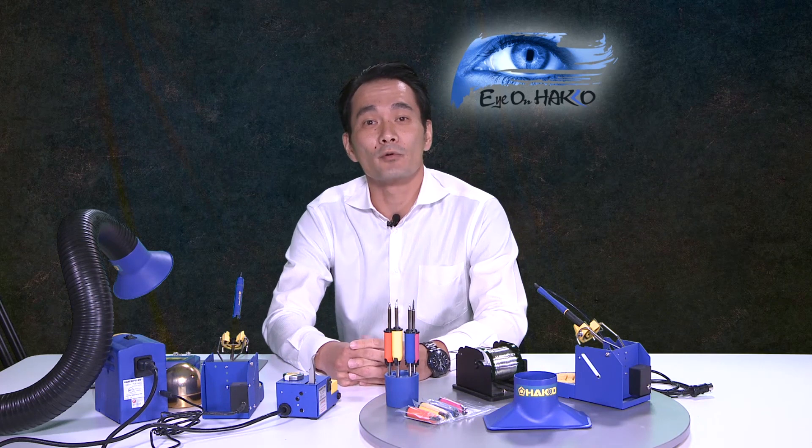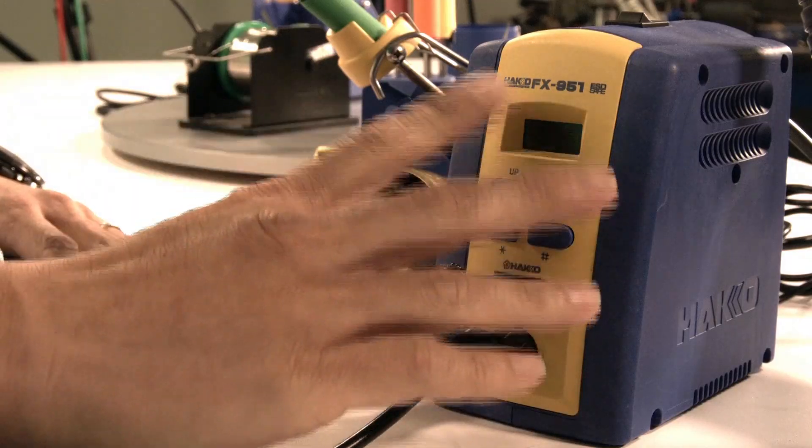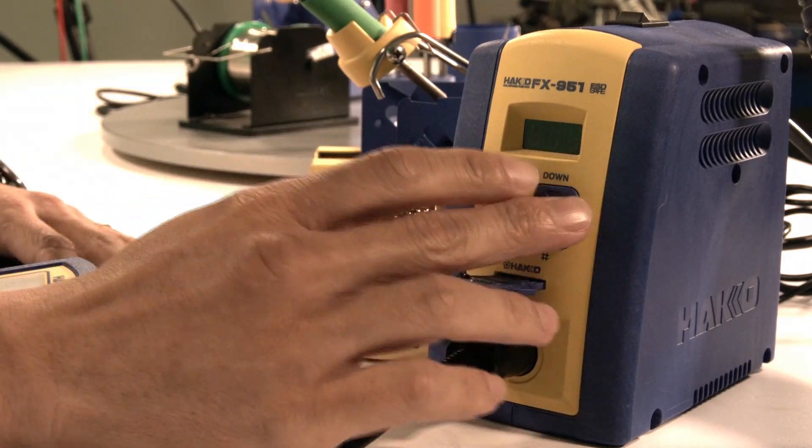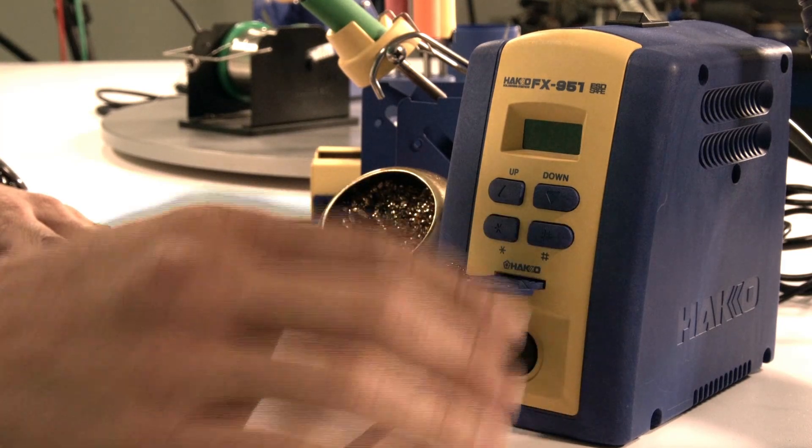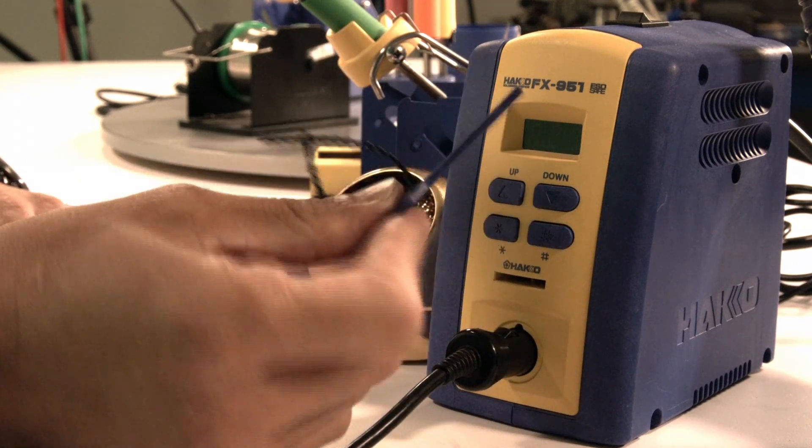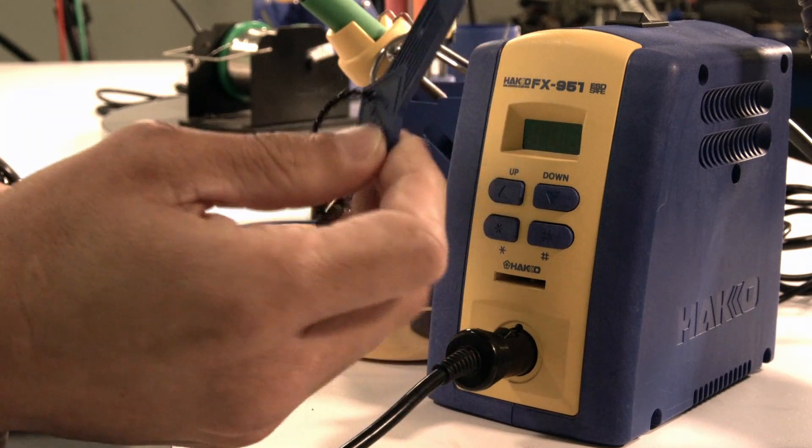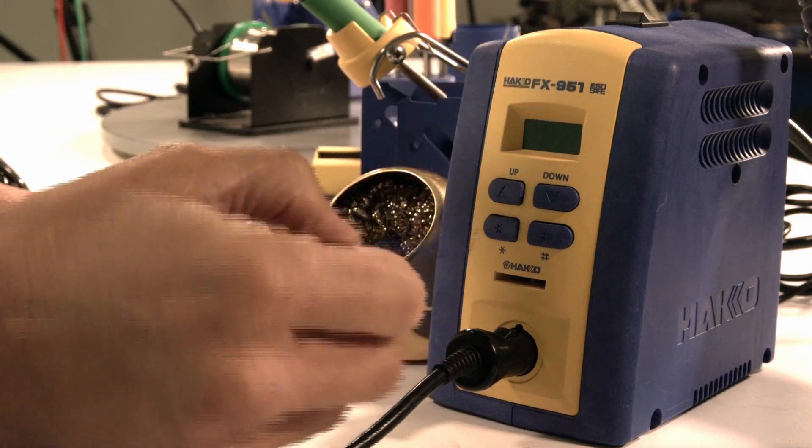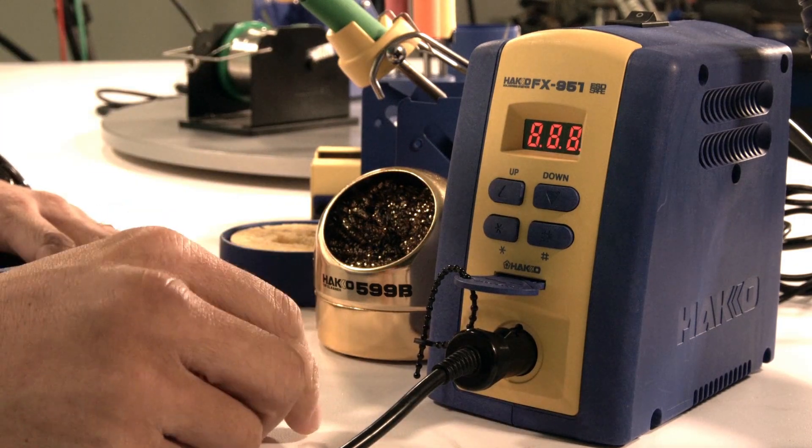Today I'm going to go over the operation and system parameters, so let's dive right into it. We have the FX-951 here. You can see there are four buttons: up and down button, a star button on the bottom left, and the pound button on the bottom right. This is your card key, a very important tool when changing parameters, so make sure you have the B-2972 key card.